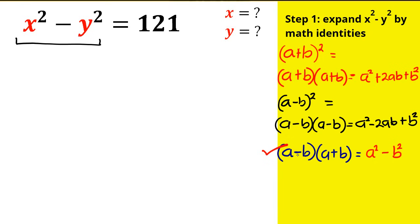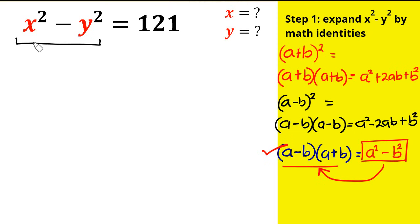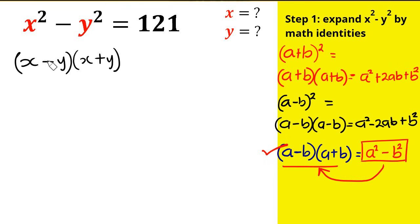The identity we need here is when we have (a - b)(a + b), which equals a squared minus b squared. We can see that x squared minus y squared matches exactly the format a squared minus b squared, so we expand the left hand side: (x - y)(x + y) equals 121.